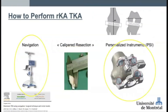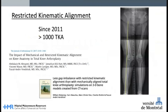To perform restricted kinematic alignment, you need a clear understanding of each patient's anatomy. So it is best performed with intraoperative direct feedback with computer navigation or robotics, or a pre-op planning as with personalized instruments. I used both techniques over the last 10 years with success. I proposed in 2011 the restricted KA protocol and published different papers reporting the clinical outcome using both navigation and personalized instruments.